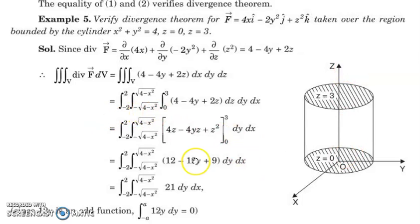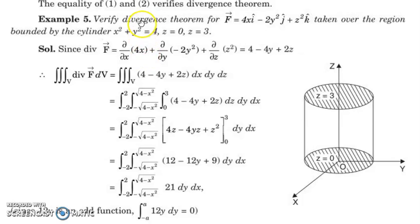For the circular region, y varies from minus root of (4 minus x squared) to plus root of (4 minus x squared), and x varies from minus 2 to 2. These are the limits for the circle x squared plus y squared equal to 4. Integrating with respect to z first, you will get 4z minus 4yz plus z squared evaluated from 0 to 3.